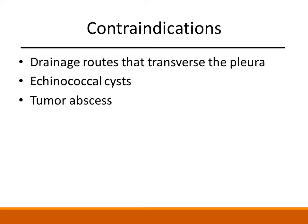While percutaneous drainage may be performed in essentially every organ system, it can be contraindicated in complex situations, including procedures requiring drainage routes that traverse the pleura, as this can lead to a risk of pleural effusion, pneumothorax, and empyema. Echinococcal cysts, as leakage of contents during the drainage process may elicit an anaphylactic reaction. And finally, tumor abscesses, as this may require lifelong catheter drainage. While drainage in these cases can be performed successfully, the procedure will be more technically difficult, have a lower chance of success, and a higher rate of complications.